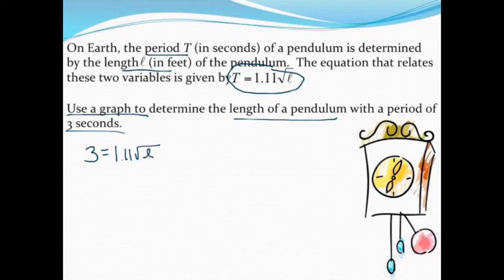and ℓ is the length of the pendulum. Let's solve it algebraically just to see how easy that is, and we'll take a look at the graph. I'm going to start by dividing both sides by 1.11 to get that square root part isolated. Using a calculator, that comes out to be about 2.70 equals the square root of ℓ.